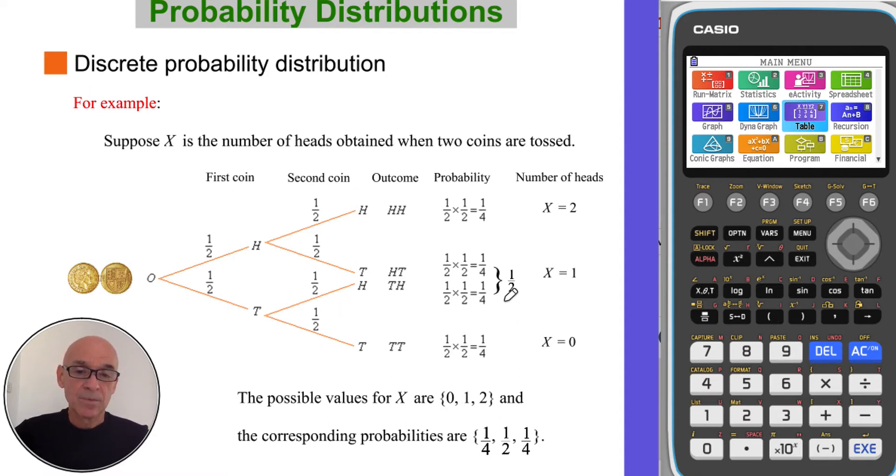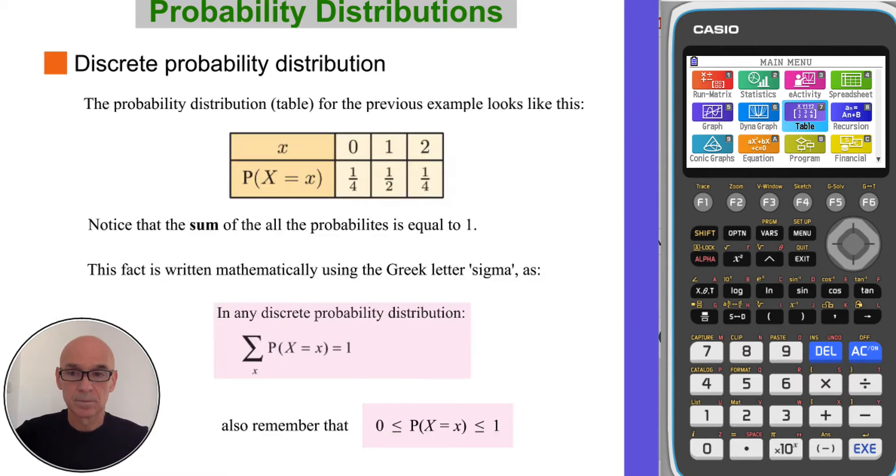A quarter, sorry, a half, remembering that the X is 1, you have to add these two probabilities in the middle. So the probability distribution, there was a table of that example, looks like this.